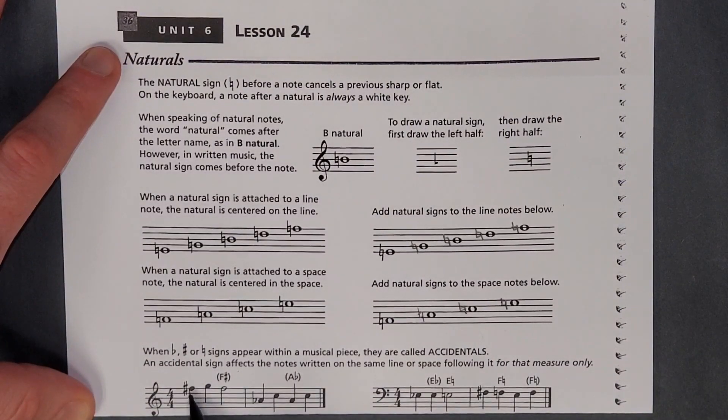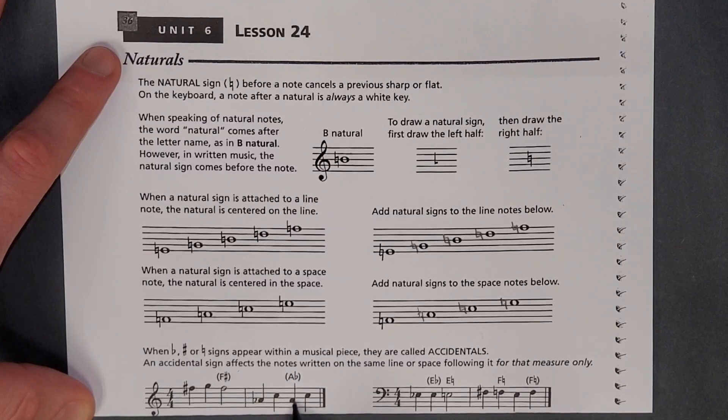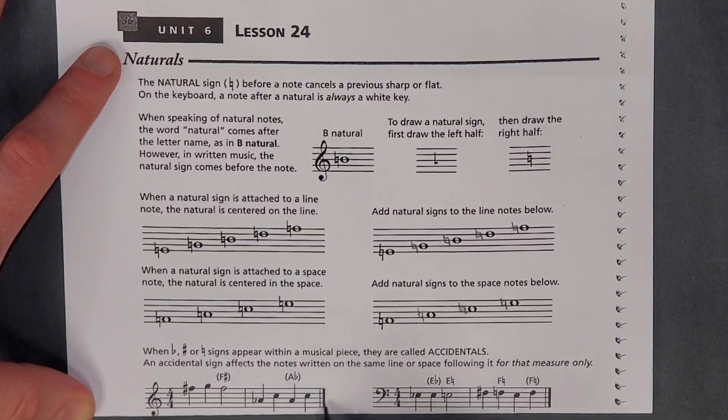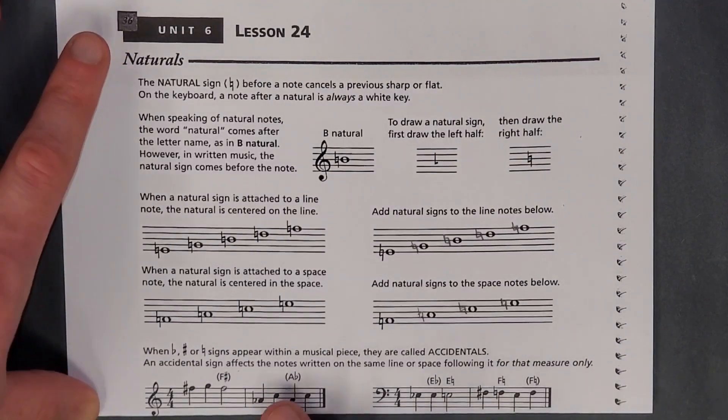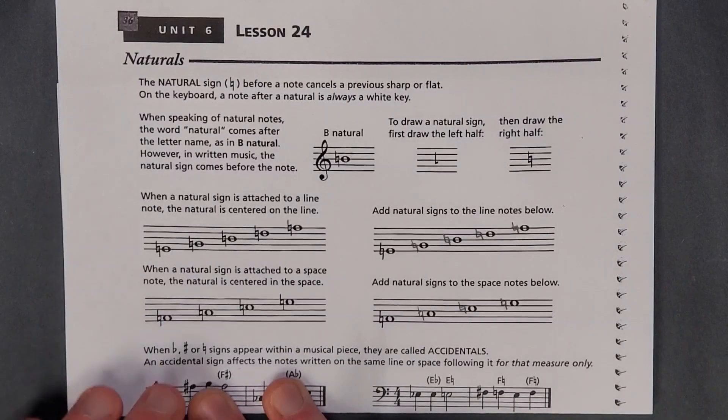So this F sharp also makes this sharp F, and this A flat also makes this A flat. But if you had an F in this measure, it would no longer be sharp, because this sharp only counts for this measure, these flats only count for that measure.